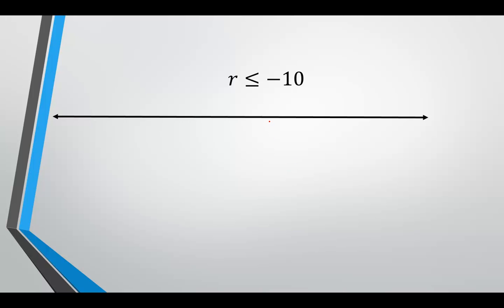r is less than or equal to negative 10. Let's locate 0, using big units — negative 5, negative 10, and negative 15. If r is less than negative 10, it will be everything to the left of negative 10, never stopping. And at negative 10, it's less than or equal, so we need a bracket at negative 10. For the interval notation, read left to right: parentheses, negative infinity, comma, negative 10, close bracket. This represents all numbers less than or equal to negative 10.